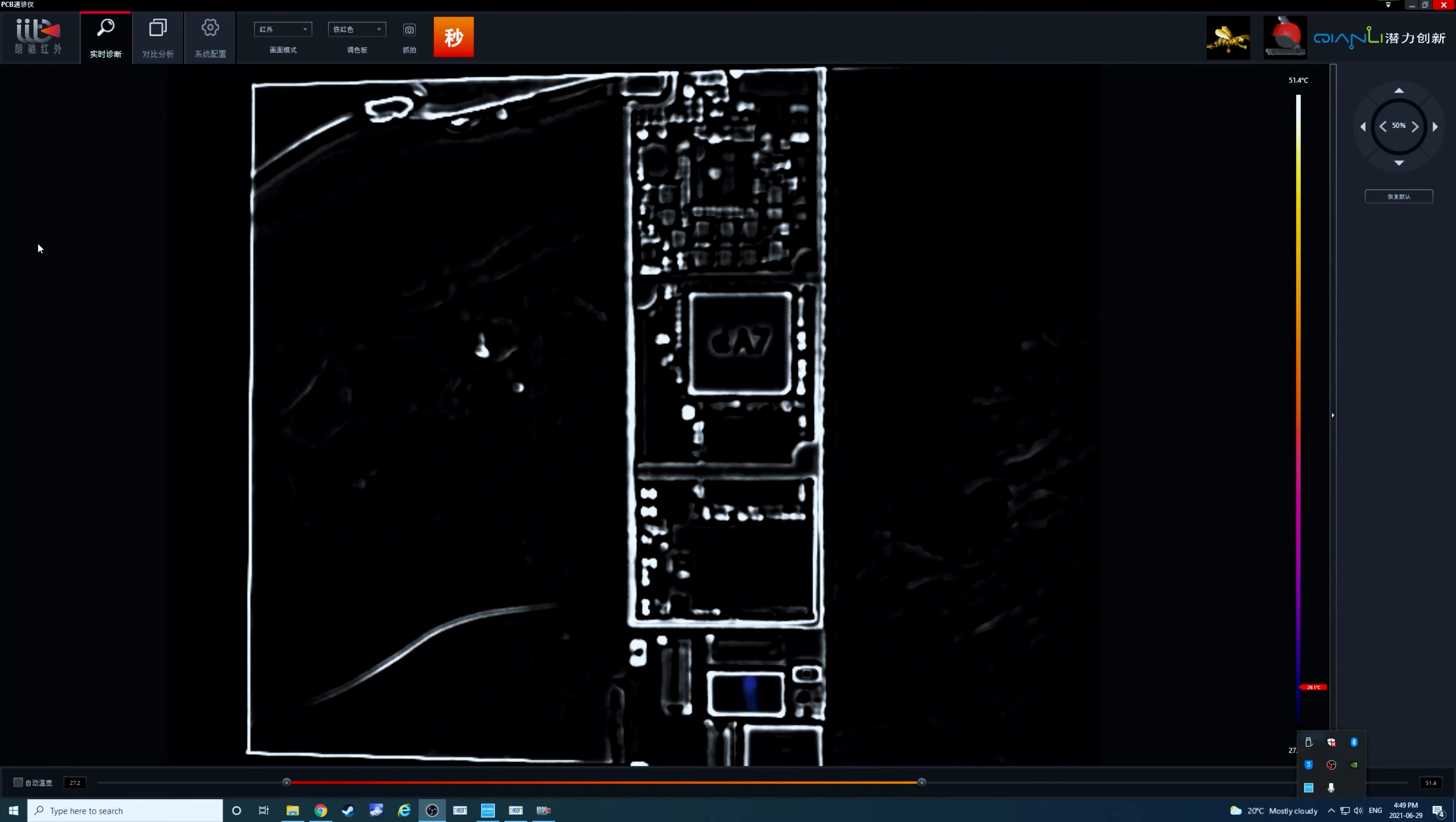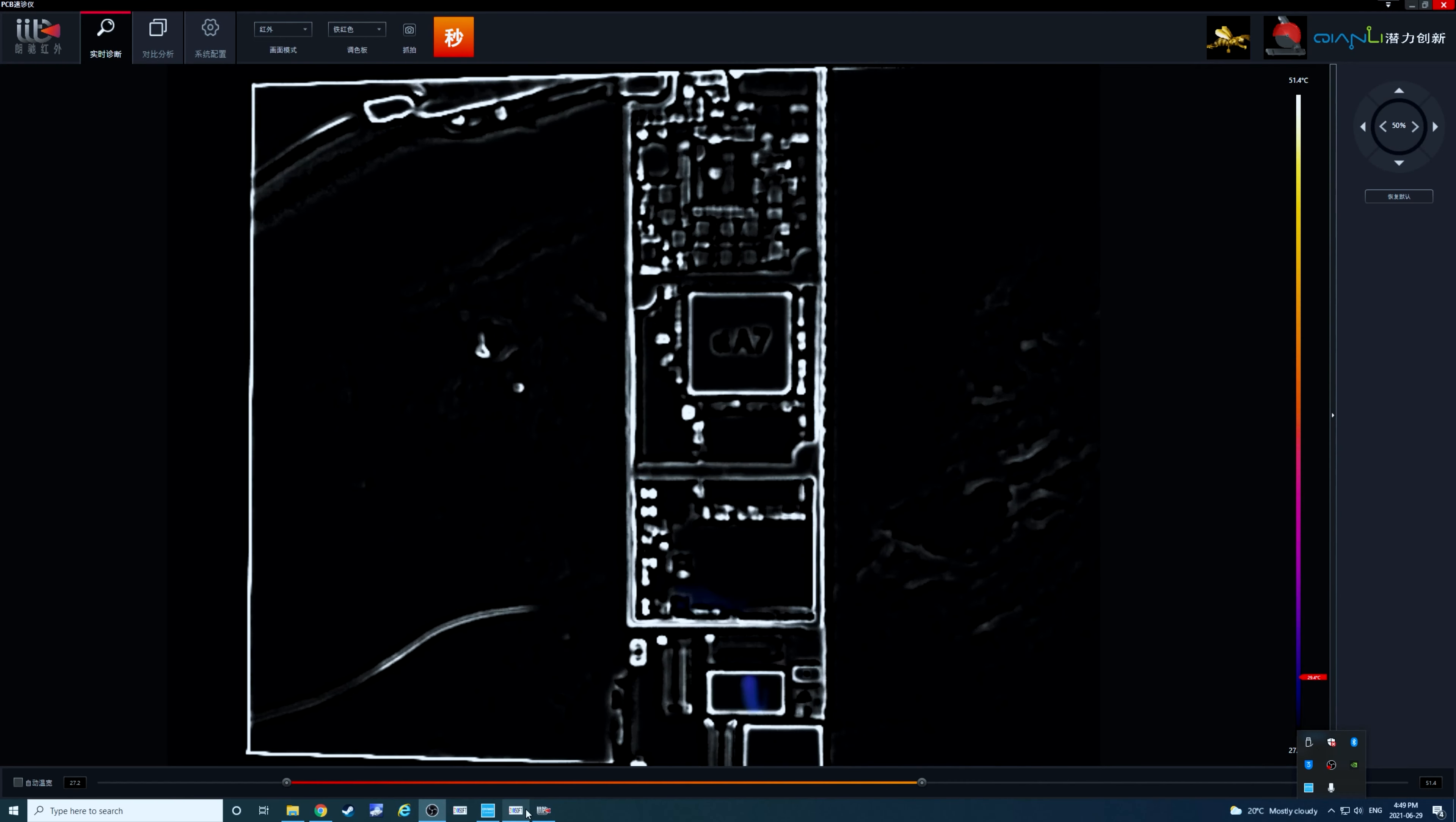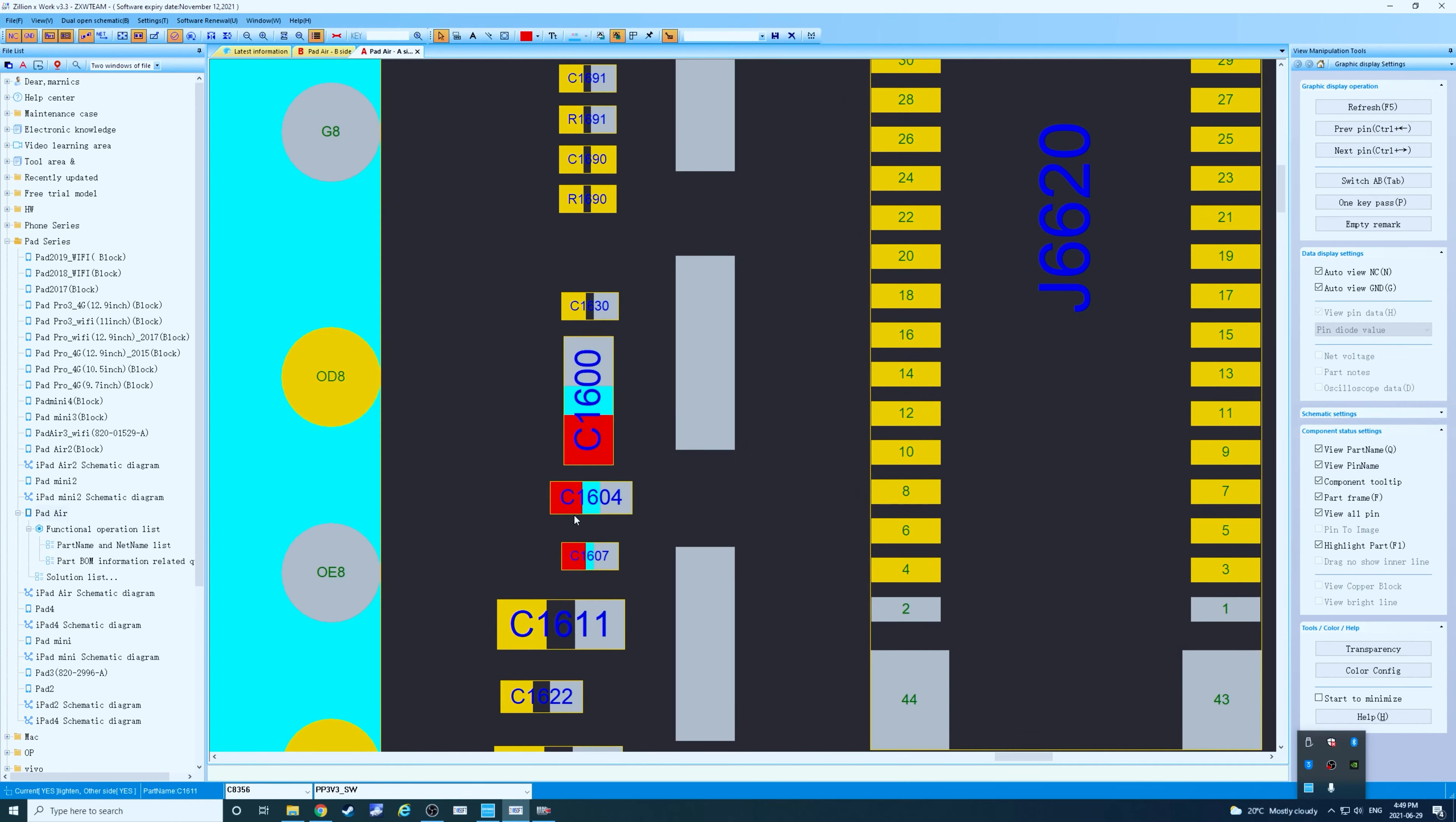Switch over to the thermal view. Inject voltage in three, two, one. So we can see something heating up there, right here beneath the NAND. Let's check in ZXW view on that three volt line. So we do have these three caps in that area. It looks like one of these caps is short to ground, has become a wire.